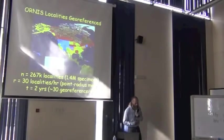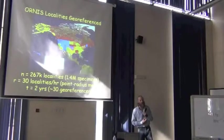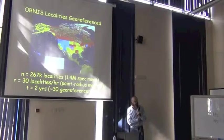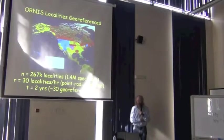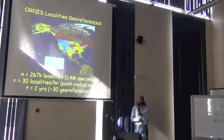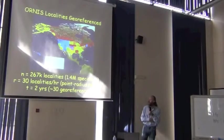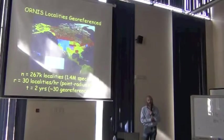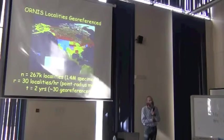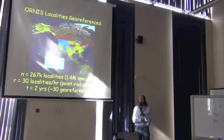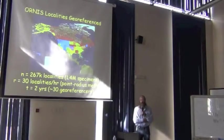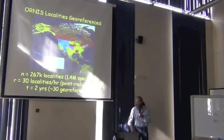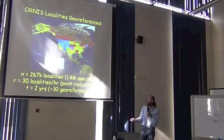Because of that, we were able to use the same sort of arguments to get money to georeference the ornithological collections on ORNIS, the sister network. Here the scope of the problem was fairly similar. Again, 1.4 million specimens, but this time 267,000 localities. And you'll note, because ORNIS came later and we learned some things in MANIS, that we were able to double the rate of georeferencing to almost 38 localities per hour. And so within a period of two years and 30 different georeferencers or so, we were able to do this task.